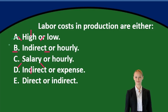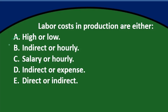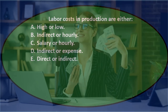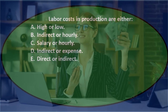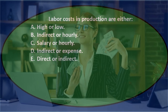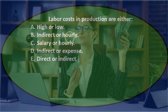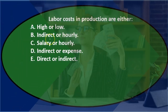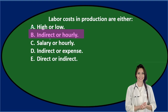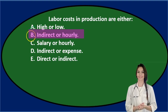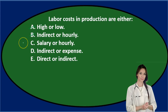Option B says indirect or hourly. Those seem like two payroll terms, but they're not really contradictory — they don't match well together. Hourly is the type of wages, while indirect would be whether it's applied to a specific job or not. So I don't think it's B; those don't seem to go together.